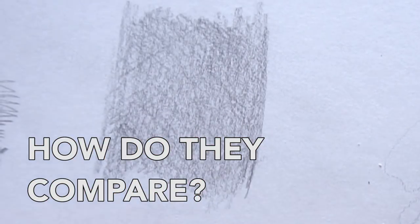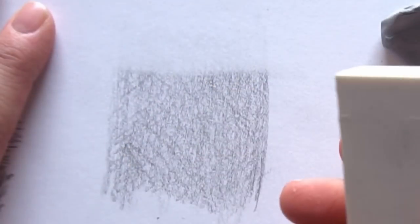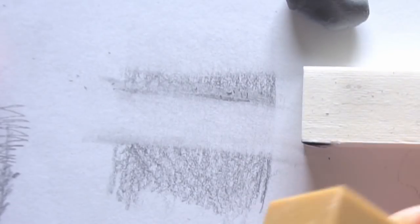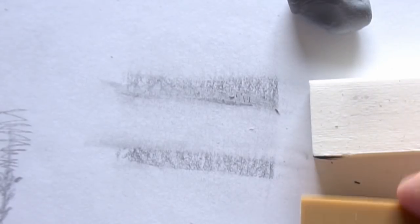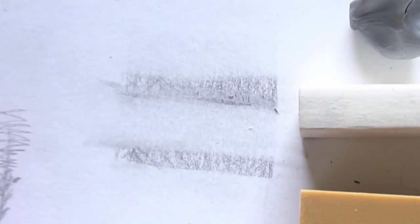So let's start with the kneaded eraser. This is the white vinyl eraser. And this is the gum eraser. So you can see a little bit quicker. I feel like it just works quicker than the others but they all have their own unique characteristics.